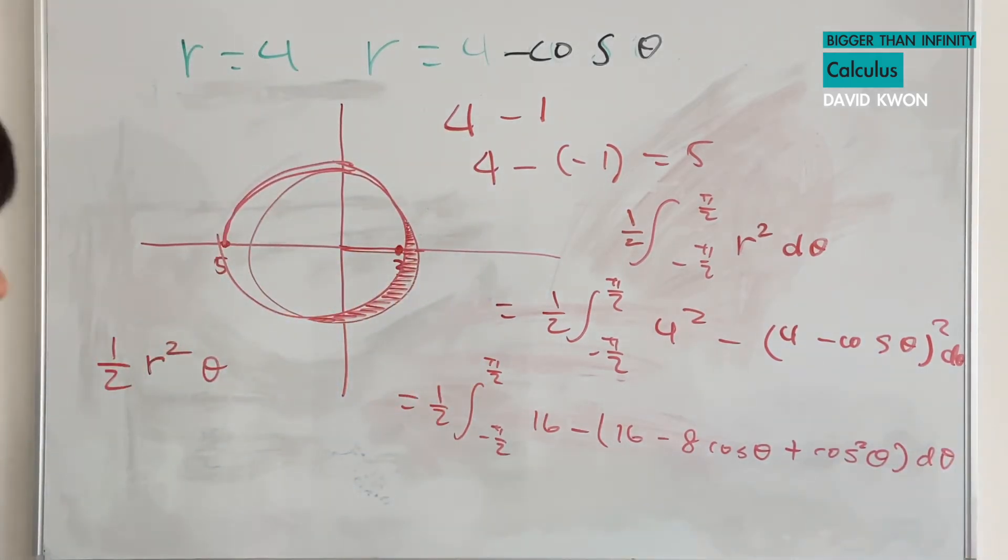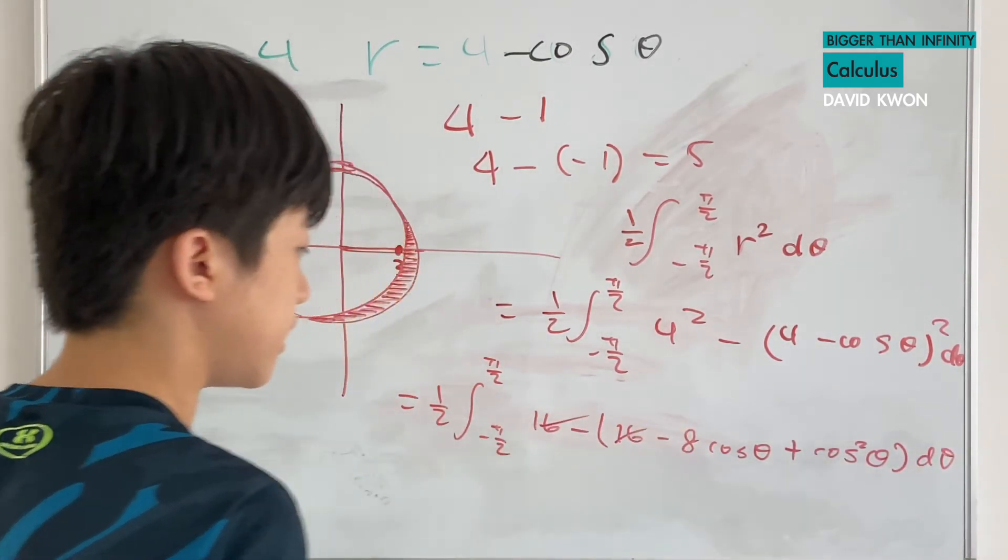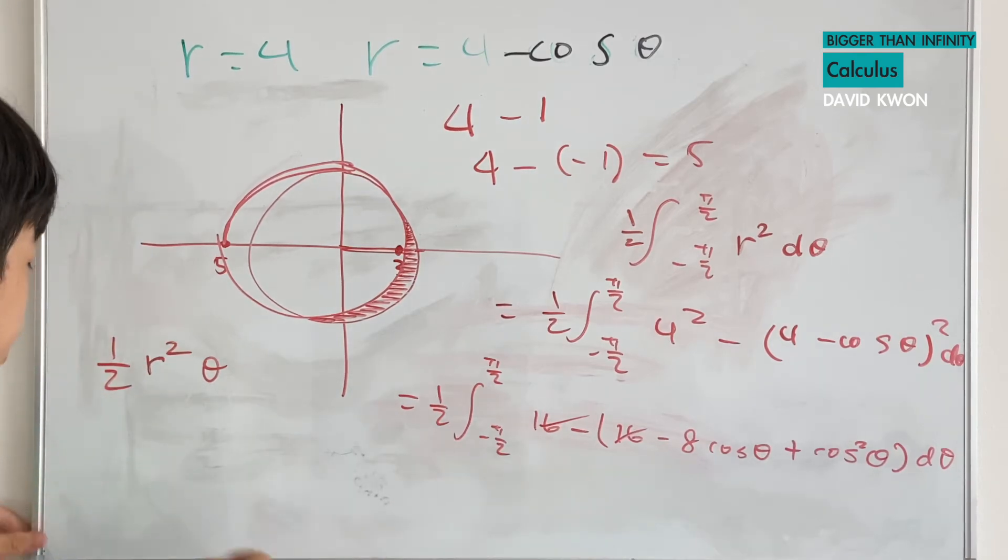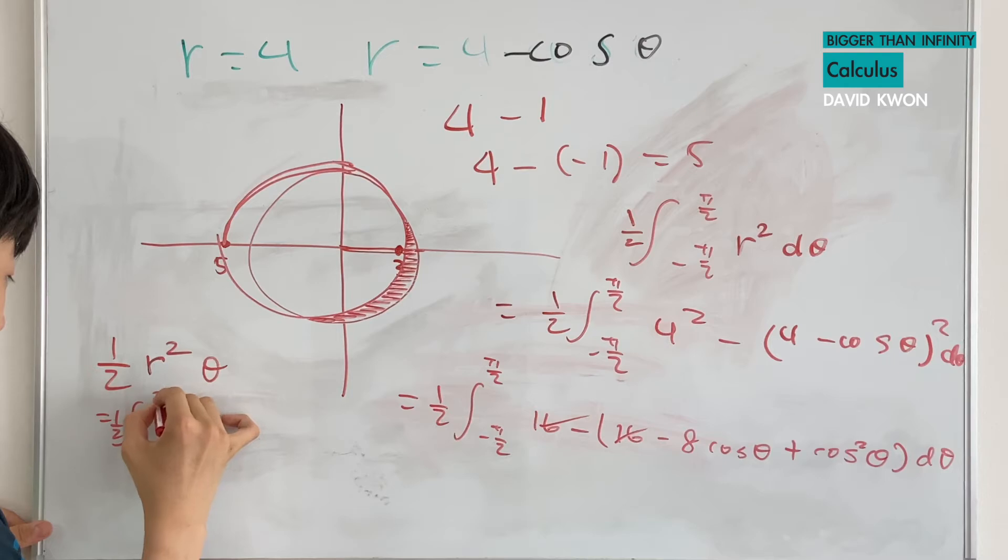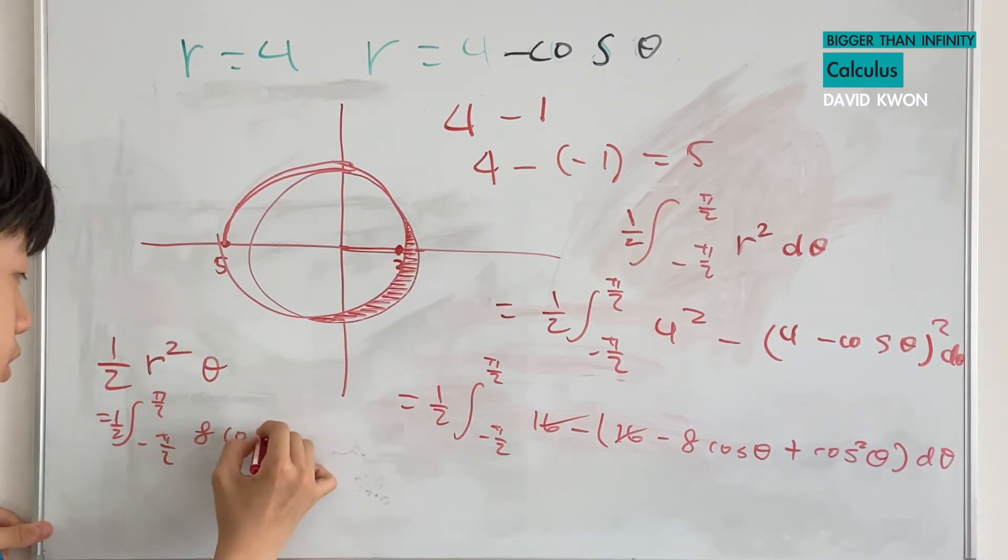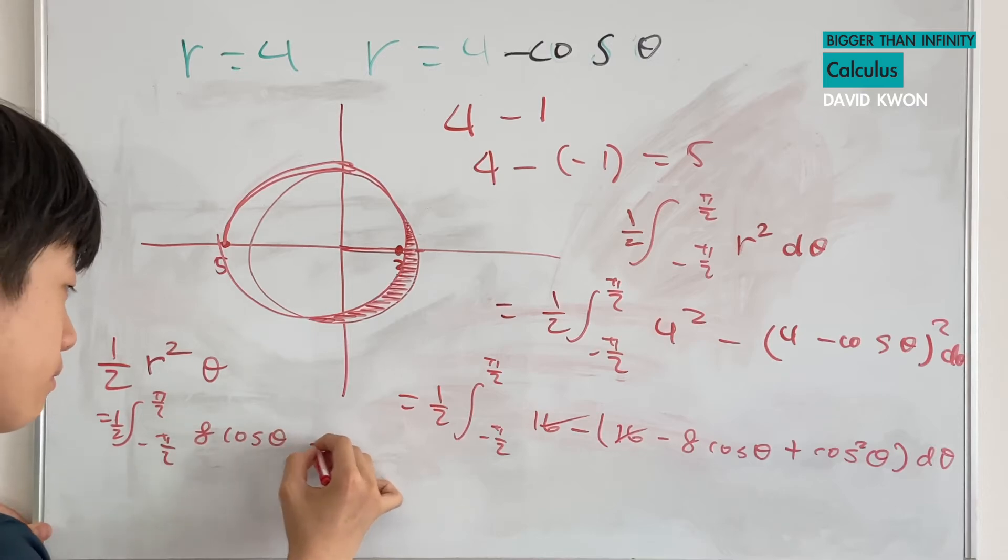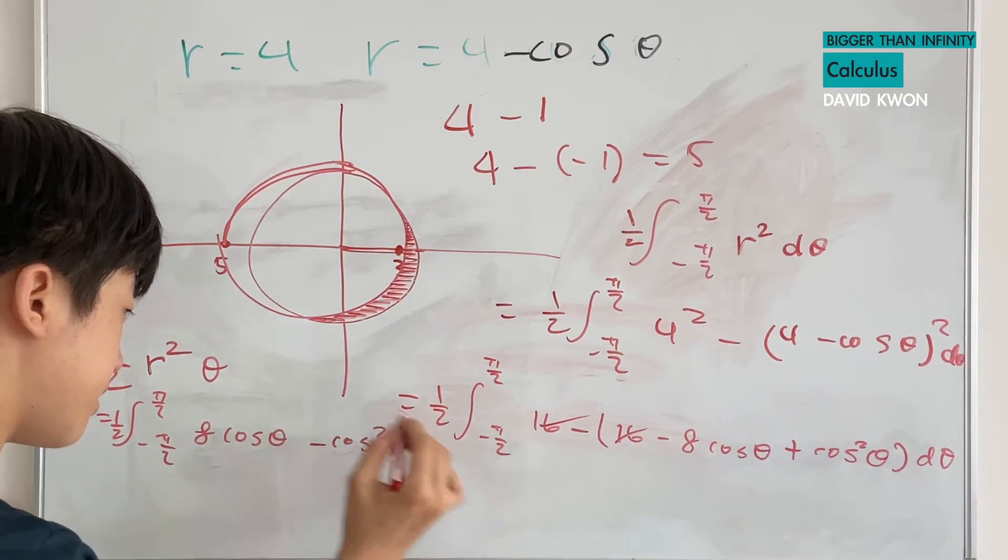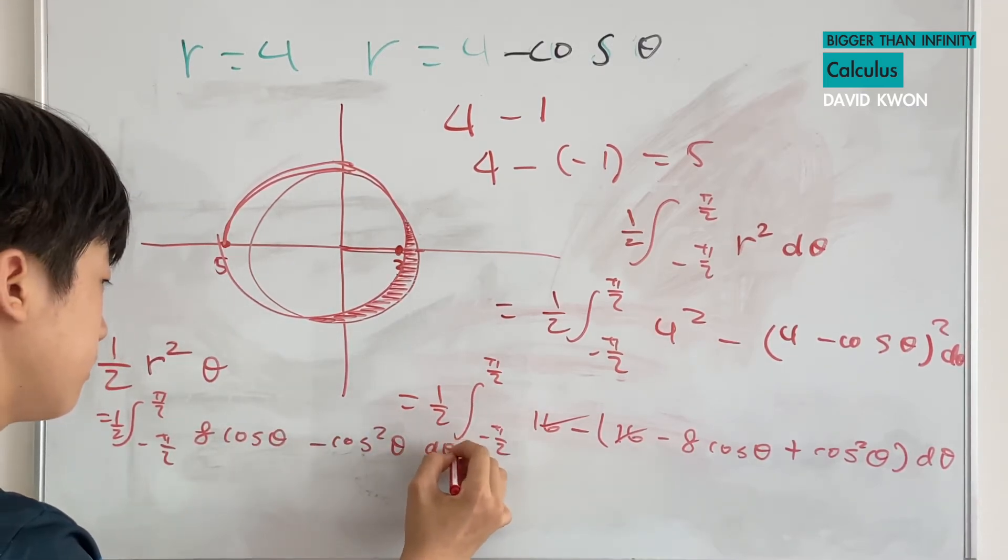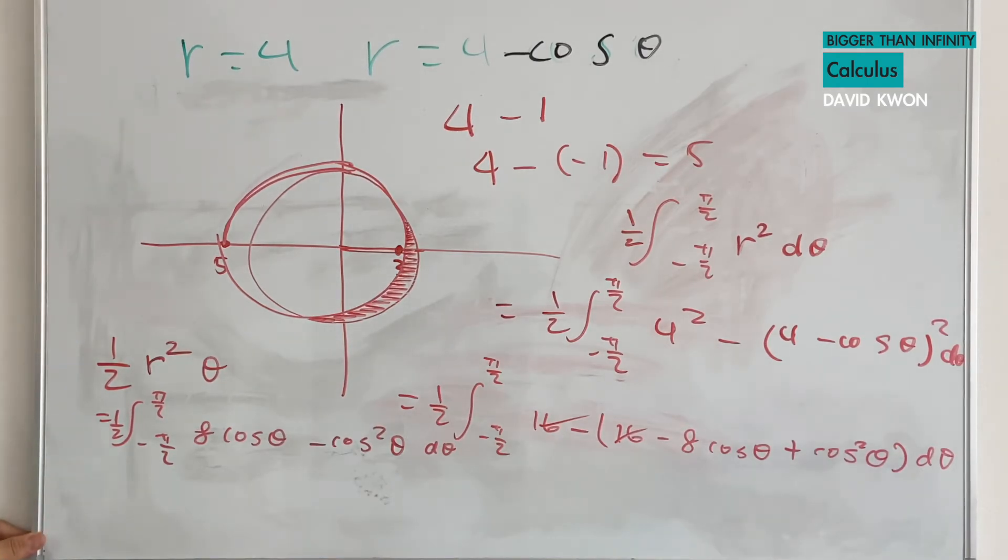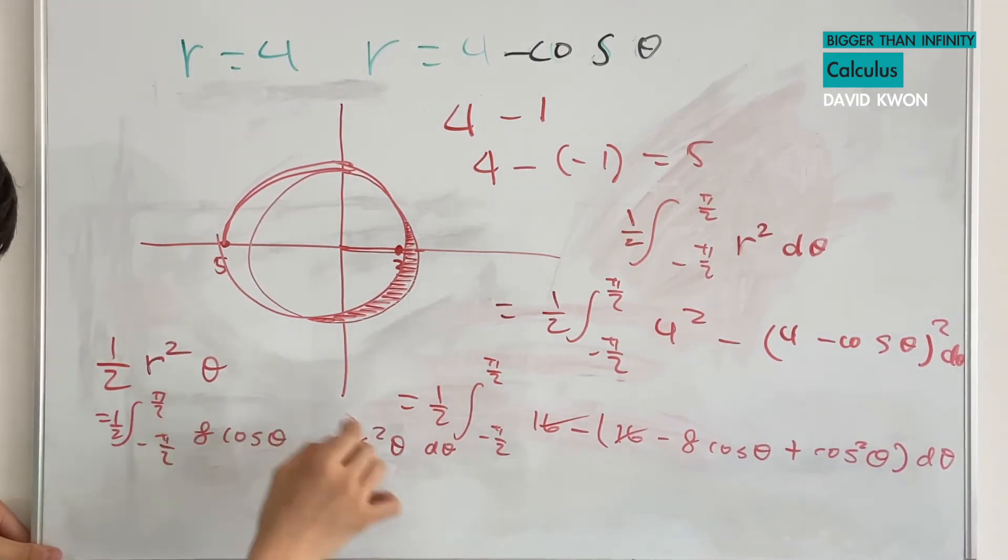And the 16 cancels it out. And now I have a brand new equation that I will legitimately solve for, which is now 8 times cosine theta minus cosine squared theta d theta. So this is what I will actually solve.